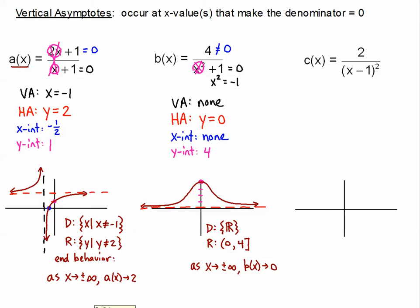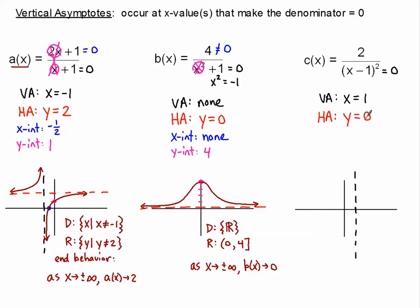Finally, for c of x, we're still working on vertical asymptotes. I set the denominator equal to 0 and solve: the value of 1 makes it equal to 0. So the vertical asymptote is x equals 1, and I'll dot that in. The horizontal asymptote is y equals 0 again — we'll confirm that once I've taught you how to find horizontal asymptotes.